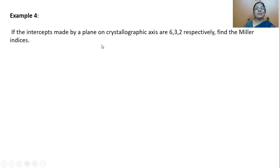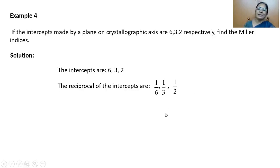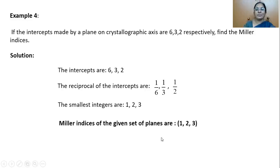Next example: if the intercepts made by the plane on the crystallographic axes are 6, 3, 2 respectively, find the Miller Indices. Very simple — they have straight away given intercepts without primitives. Write intercepts: 6, 3, 2. Find the reciprocals. The biggest number is 6, so take LCM = 6. Reducing the fractions, you find the smallest integers to be 1, 2, 3. So the Miller Indices of the given set of planes are (1 2 3).